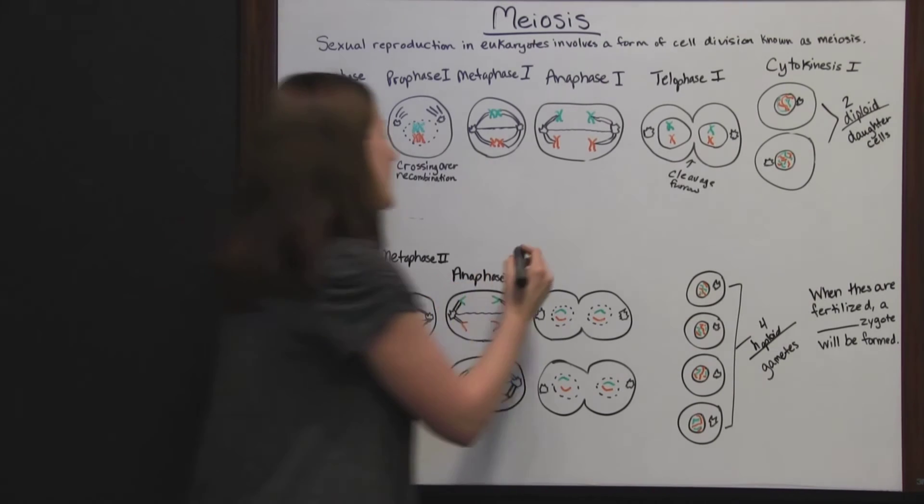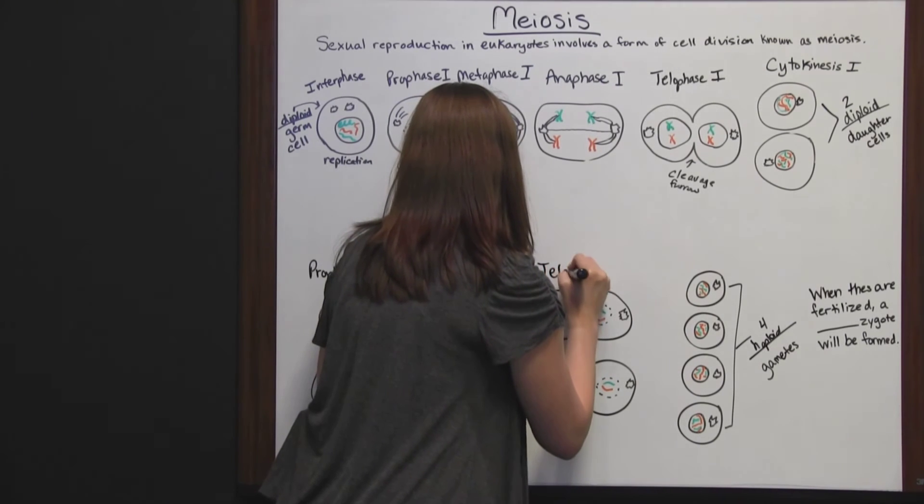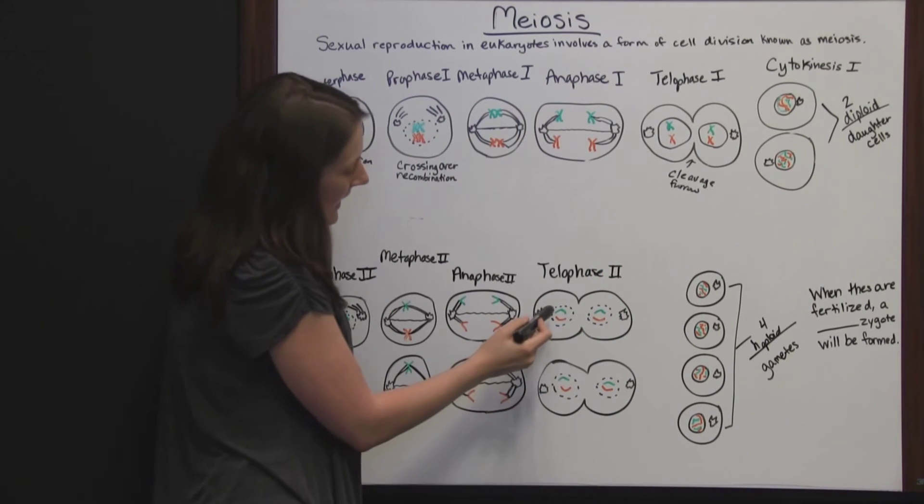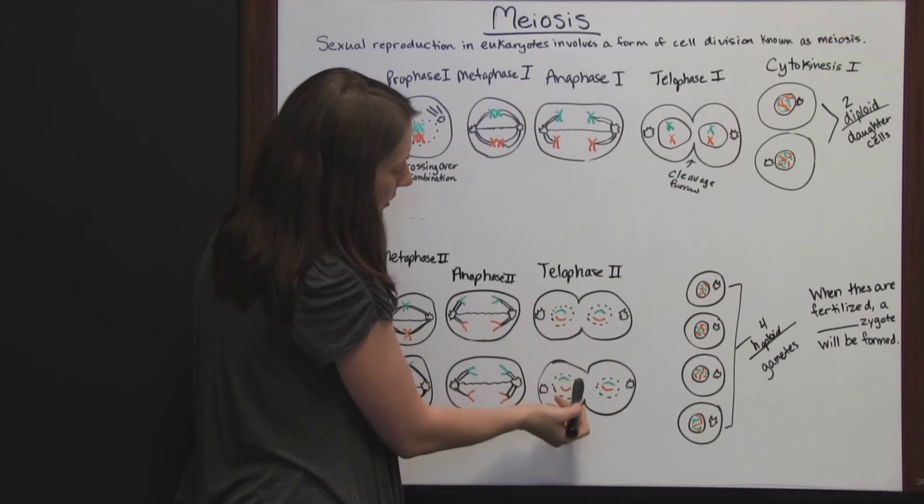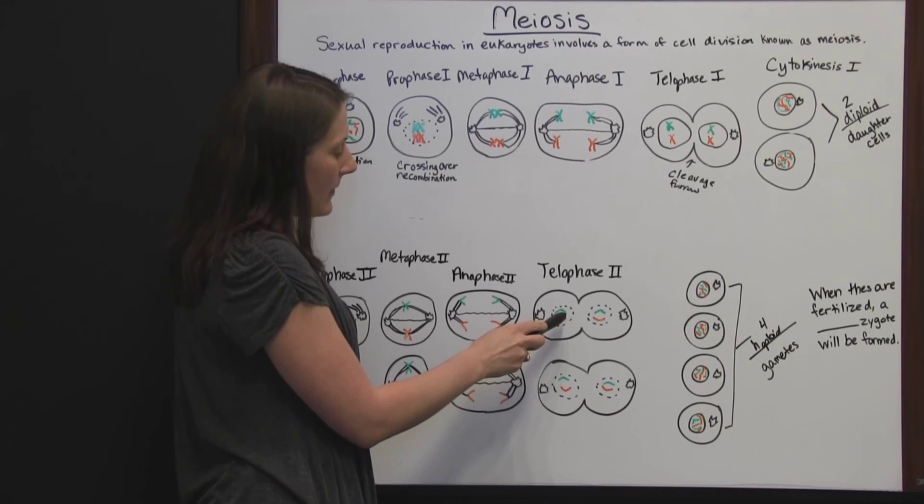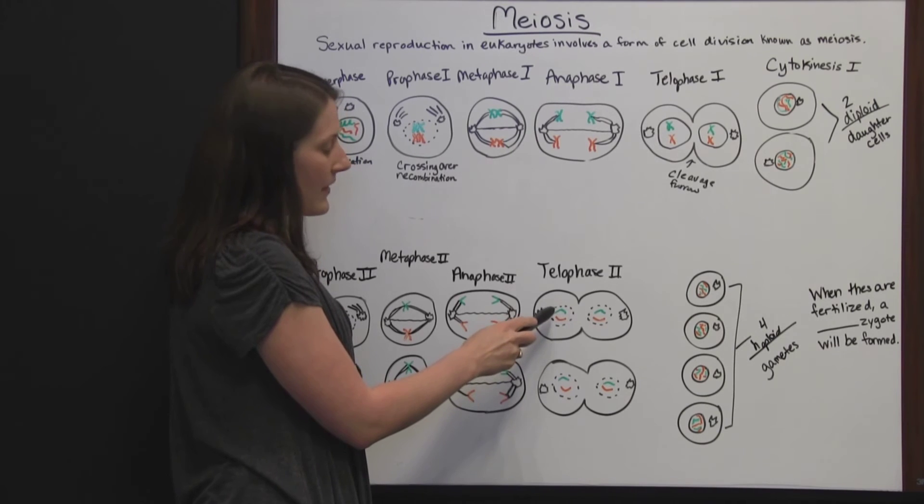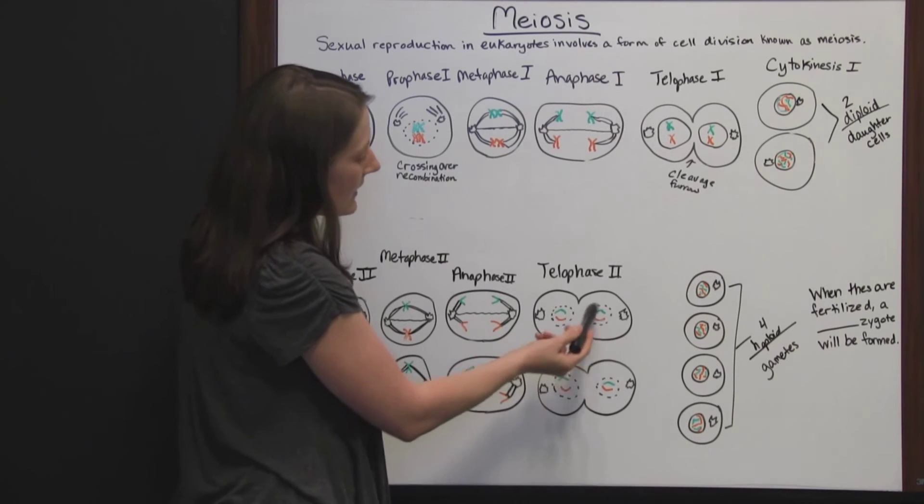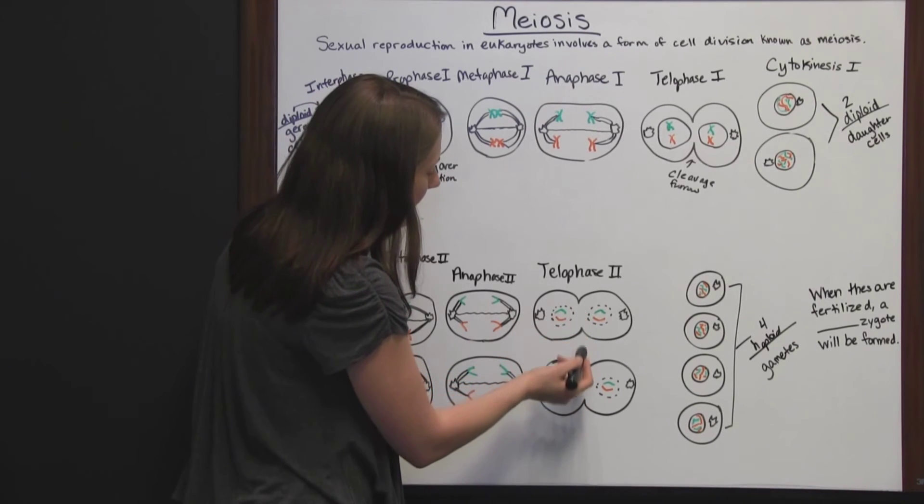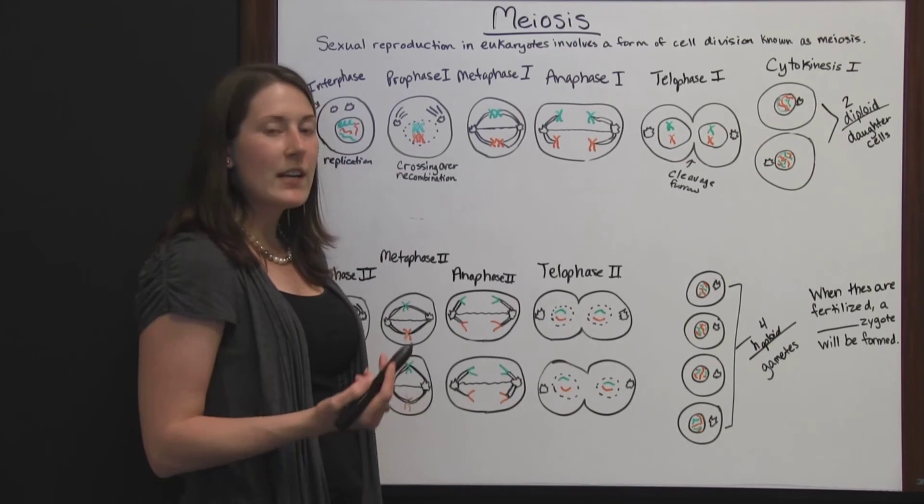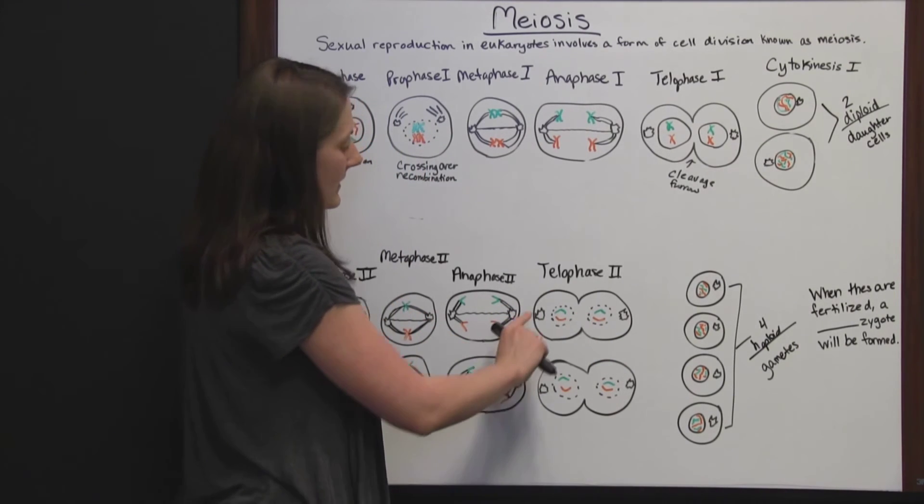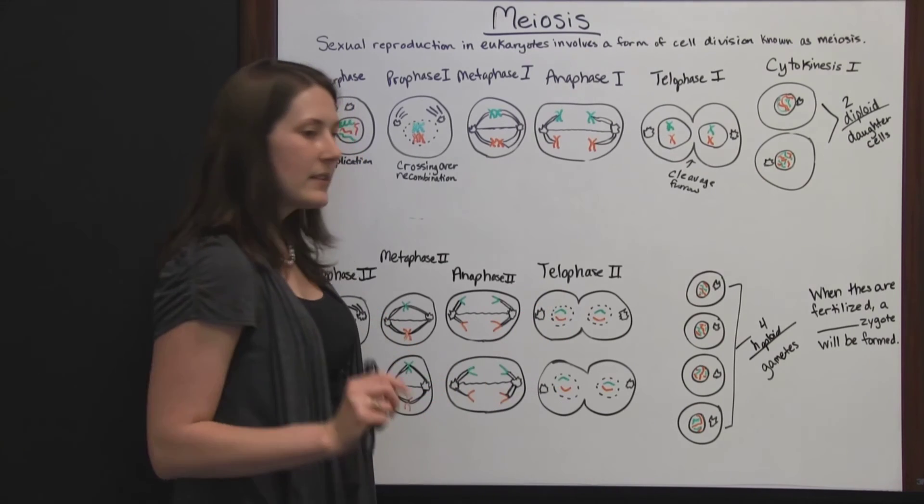In telophase II, a nucleus forms around the new genetic material that contains both mother and father genetic information in each nucleus. The cleavage furrow appears again as the cells prepare to divide permanently. The centrosomes have separated to opposite sides, and the microtubules have retracted.